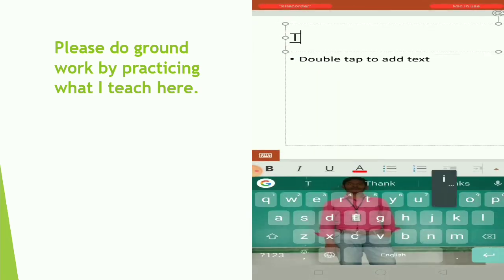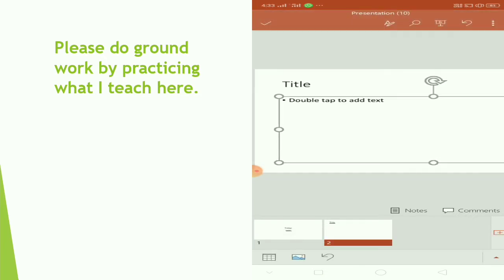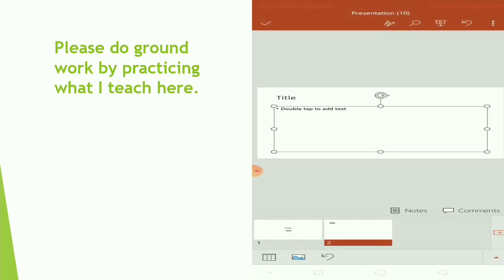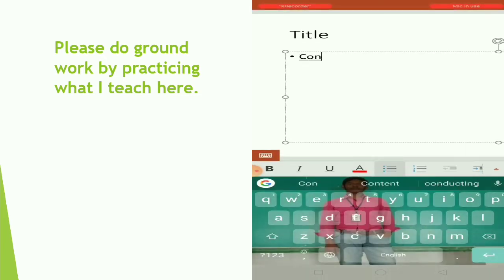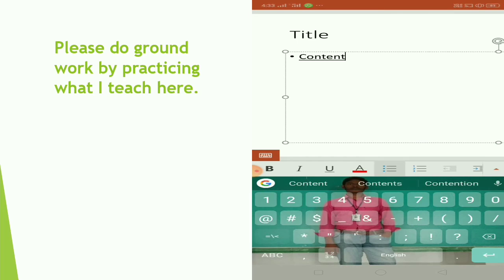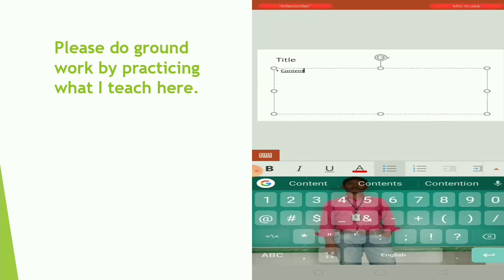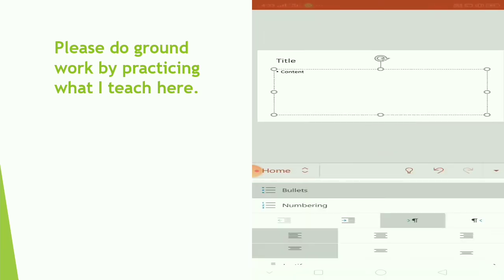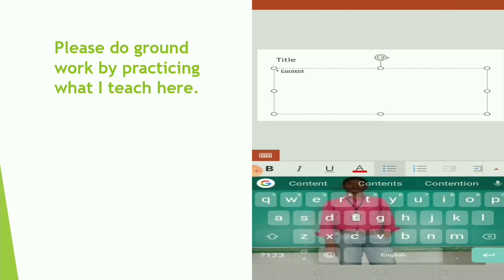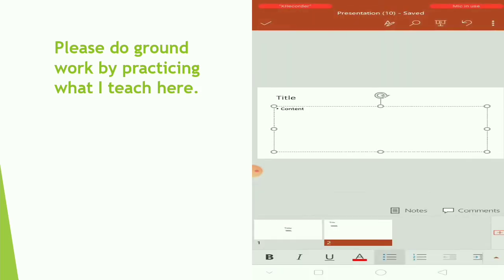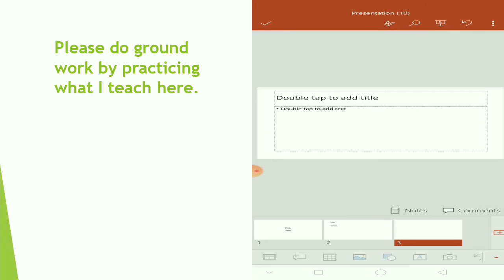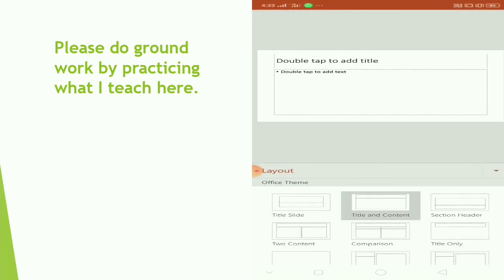I will show you the title. Now I will double click where we have the content. We will show you the content. We use the bullet points. Next slide — we will show you the same slide.